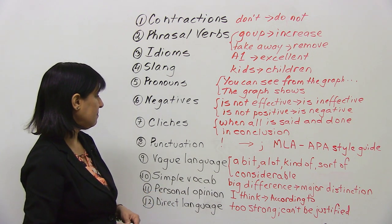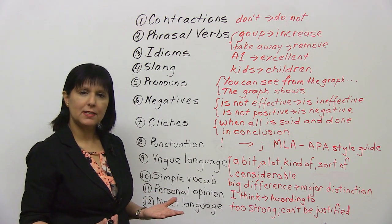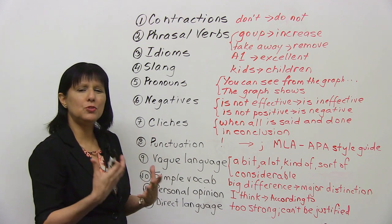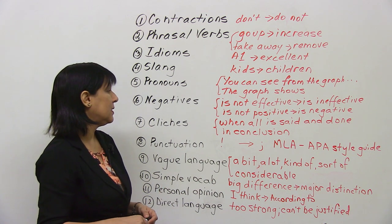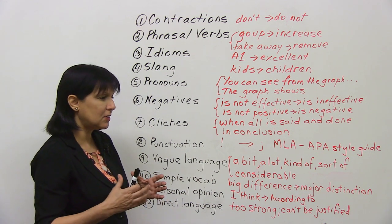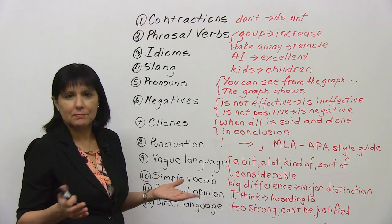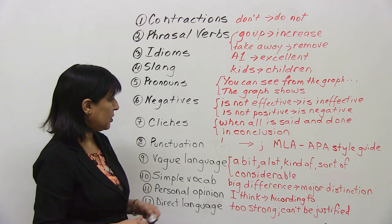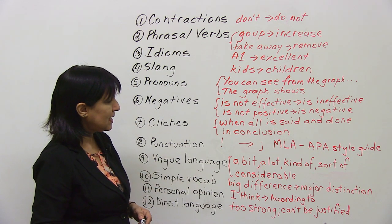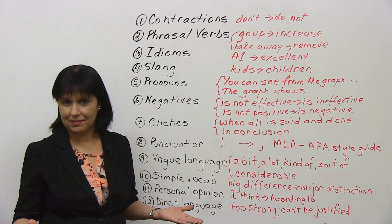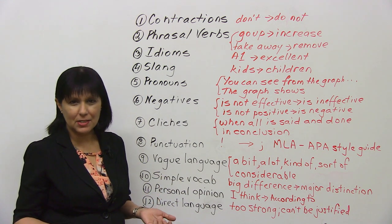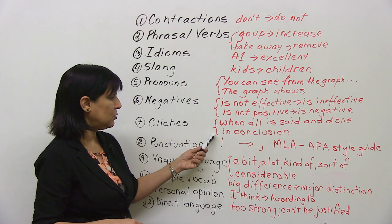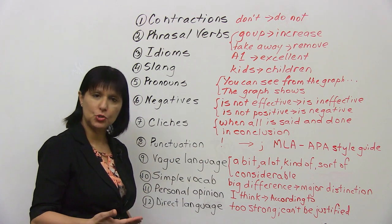Next, avoid clichés. Clichés are a kind of idiom — commonly used expressions, a kind of common wisdom about different things. You want to avoid these kinds of expressions. For example, instead of saying 'when all is said and done' — we use that in conversation, but you don't want to use it in your academic writing — instead of that, you'd use an expression like 'in conclusion.'